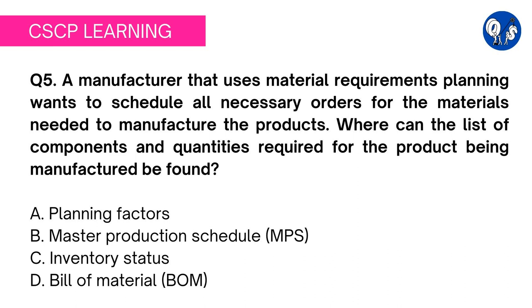Option A, planning factors, is a made-up term — you can easily identify these kinds of terms and therefore this is not the correct option. Option B: master production schedule. MPS is the process that helps manufacturers plan which products and related quantities to produce during a certain period. There is a thin line difference — the question asks where you will find the list of components and quantities to manufacture a product, whereas MPS tells you which products and how many to produce.